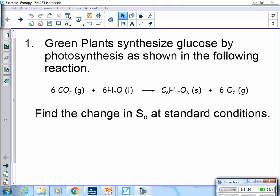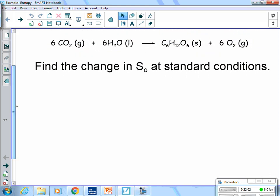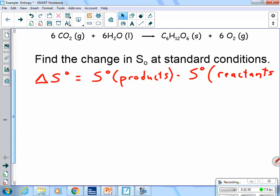We are going to work this entropy problem. It says green plants synthesize glucose by photosynthesis as shown in the following reaction. Six carbon dioxide will react with six water molecules to yield glucose, C6H12O6, and oxygen. Now we are going to find the change of entropy at standard conditions. So in order to do so, I know that delta S zero is equal to S sub zero of the products minus S super zero of the reactants.